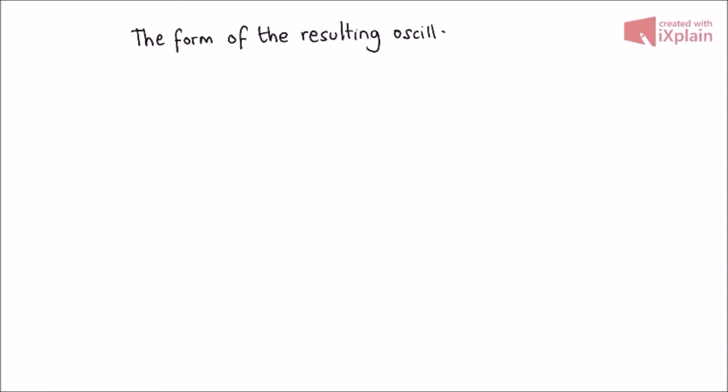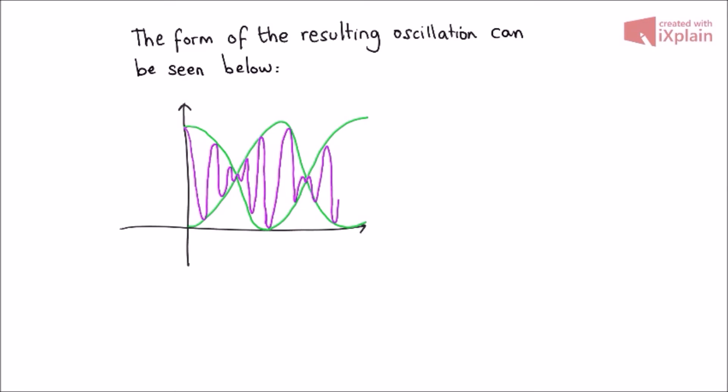So what does this even mean then? Well, let's take a look at the form of the resulting oscillation. The purple wave represents the cos omega t term, and that's an oscillation at an average frequency. And the green wave represents a cos delta omega t term, and is known as the envelope.